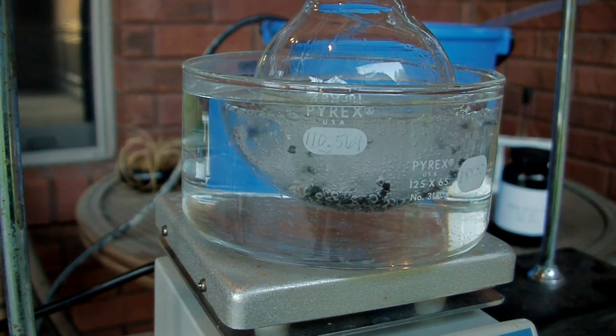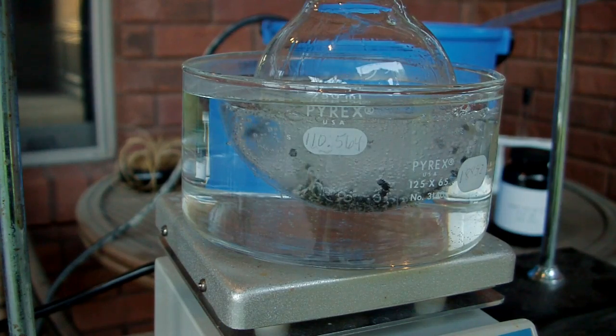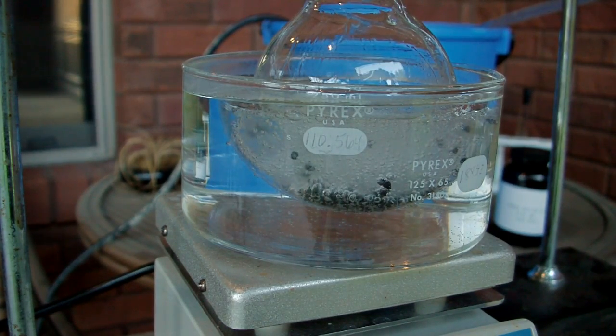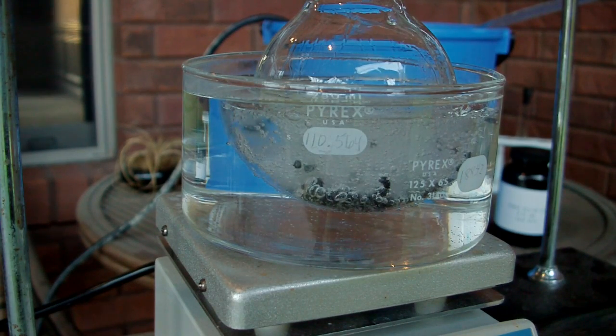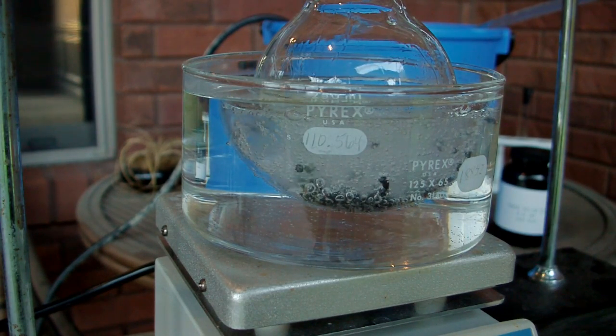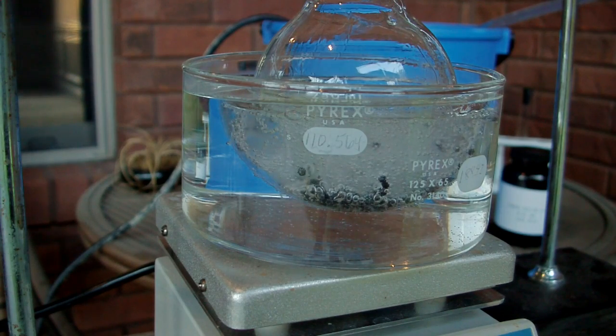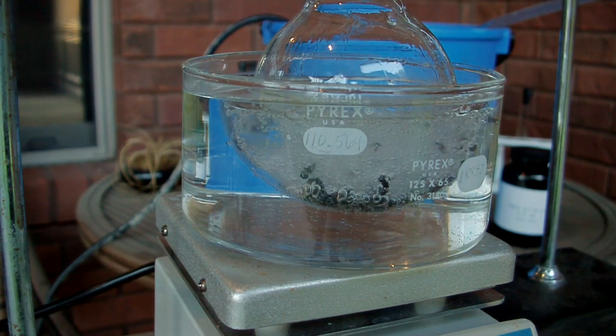Inevitably some methanol is going to come over as well. You can get rid of that by a second distillation. Take your product from this and distill it again and that should improve it a little bit. And again, if you have a fractionating column that's going to help.